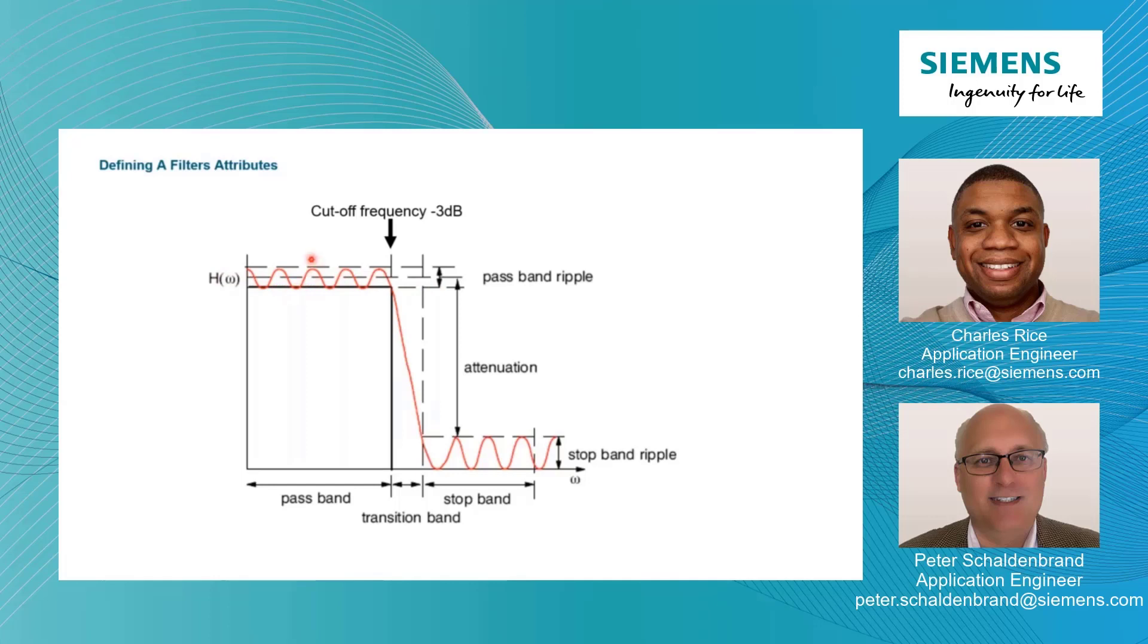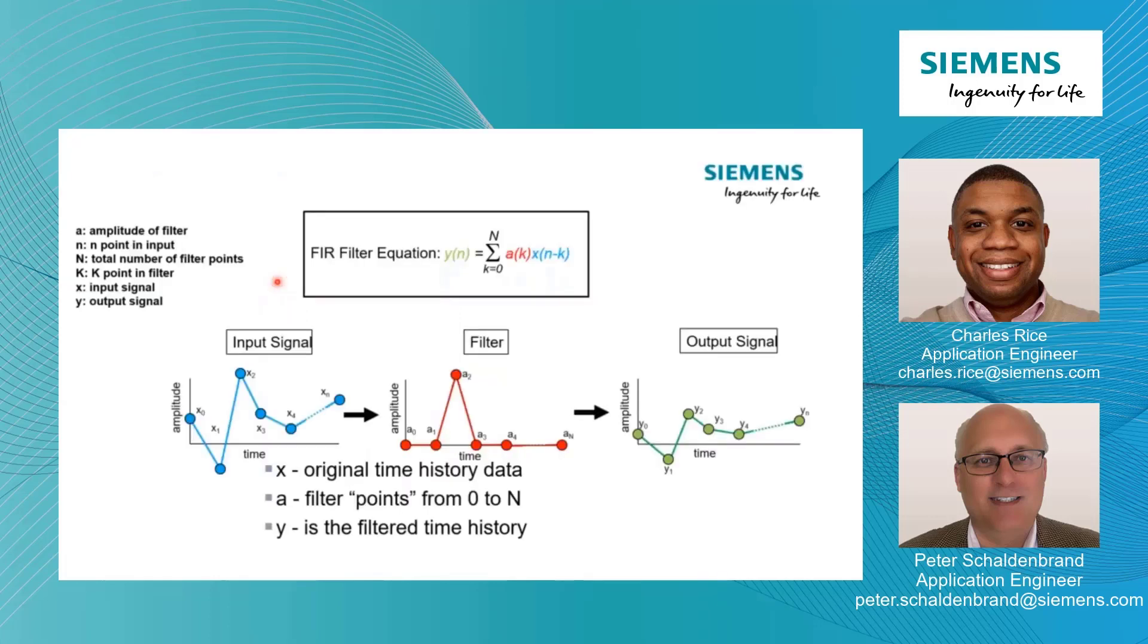So this is the FIR filter equation. This equation has basically three components. There is the input time history here, and this lowercase n represents the total number of data points in the time history. Then there's the filter, represented by this A here. And the uppercase N relates to what we call the filter order, right? We also call it taps too. It can be referred to as taps, and we'll talk about that shortly. And then there's the output time history. So those are the three components: the input, the filter, and the output signal.